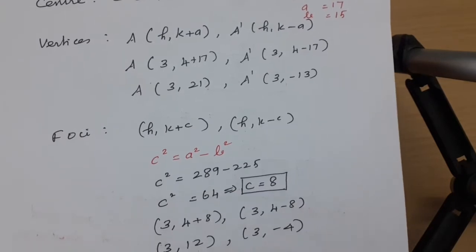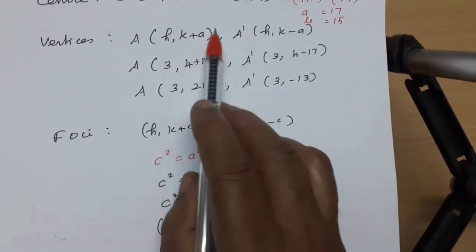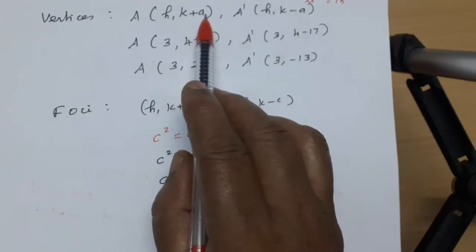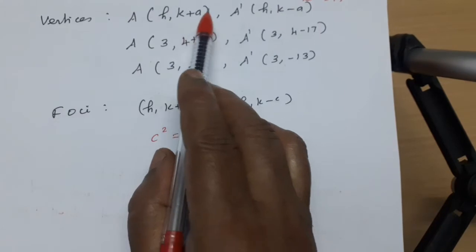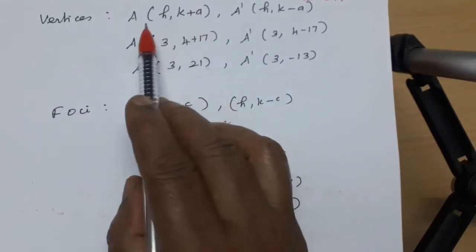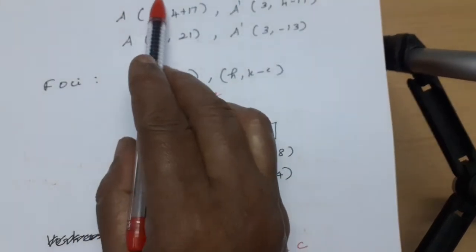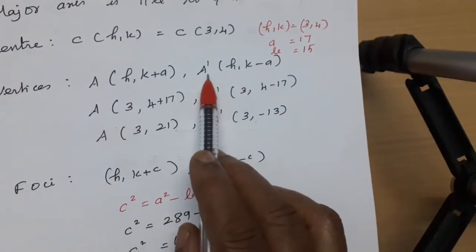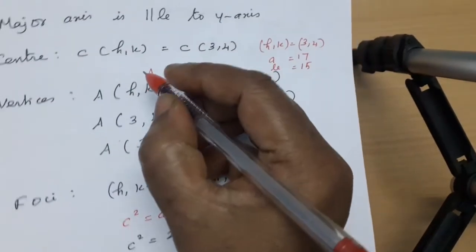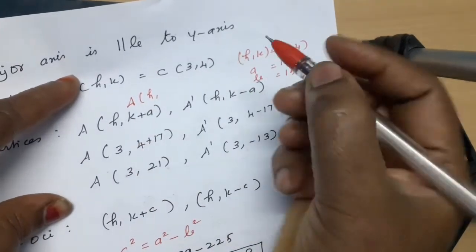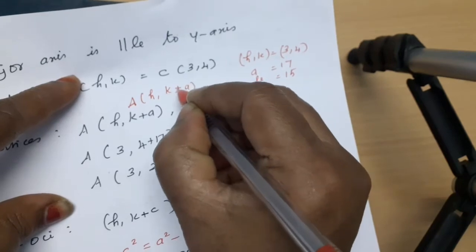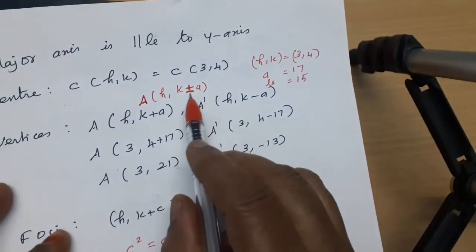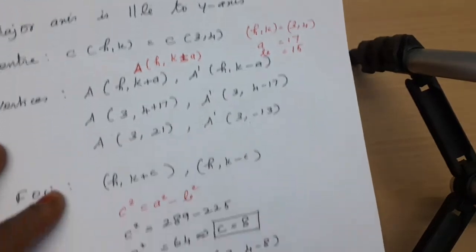Next, vertices. Since the major axis is along the Y axis, the vertices are at h comma k plus a, and h comma k minus a. That is, vertices A equals (h, k+a) and A-dash equals (h, k−a). The Y axis means we add the a value to the k (Y) component.